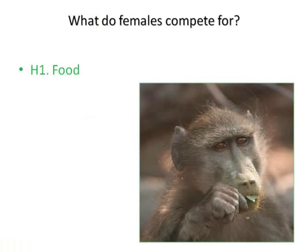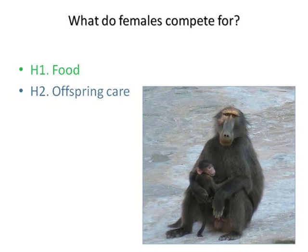I tried to envisage the different sources of competition that females could face — basically, what can females compete for in this big group? First they can compete for food. Second, they can compete for offspring care, because it's been observed that in Chacma baboons when a female has just given birth, she associates very closely with an adult male who provides protection against infanticide for her infant. Infanticide is very important pressure in Chacma baboons — it can account for up to 30% of mortalities of babies in some populations. And finally, whether they might compete for mates, which at the beginning was the most unlikely hypothesis.